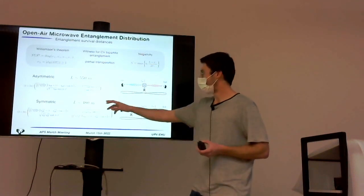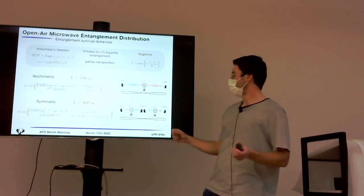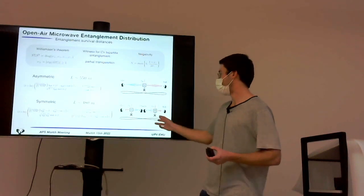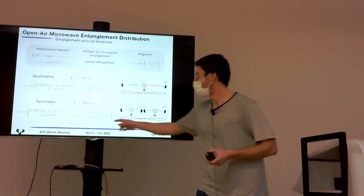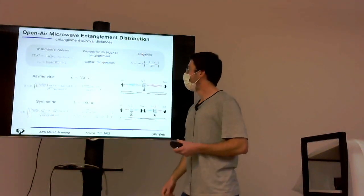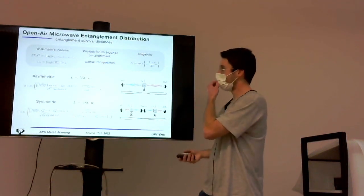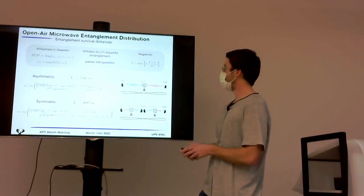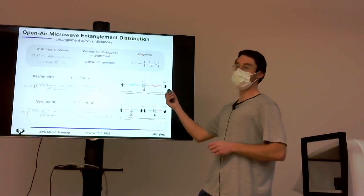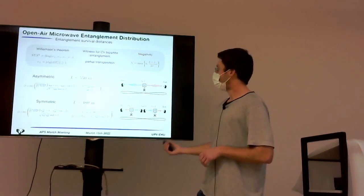But we also consider the symmetric scenario in which an intermediate party generates the states and sends both of the modes. In this case, one of the modes travel a distance L, and in this case we want to reduce that distance, but now both modes are degraded by the environment. And we compute for what we believe is a realistic scenario, we compute the distances at which the entanglement is lost. And we do that using the partial transposition as an entanglement witness, and the negativity as the quantifier.